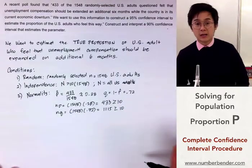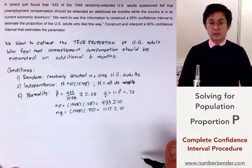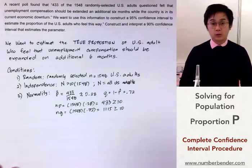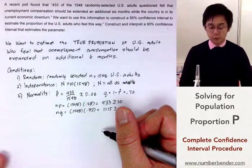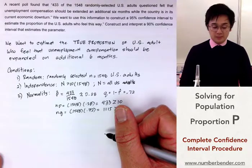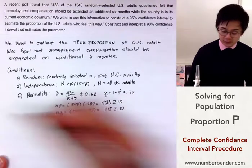Now let's write out the test that we're going to be using. We're going to be using the one proportion or one sample proportion z-interval.